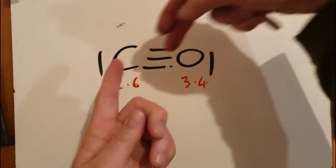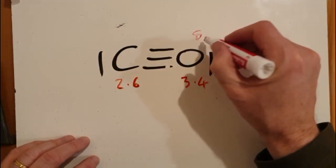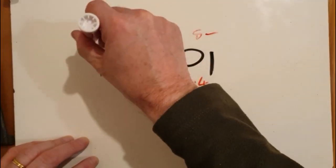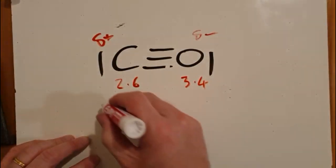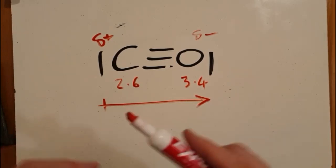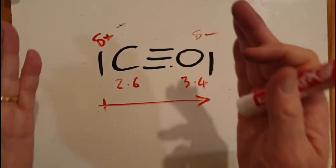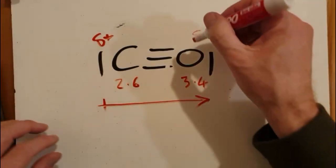So these electrons here are going to be shifted slightly over, leaving that a little negative and that a little positive. You can also write the dipole like that. Okay, so the bond is polar and the molecule is polar.